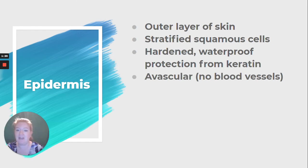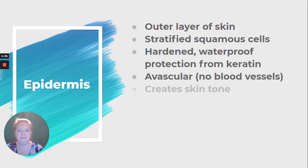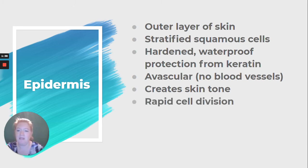It is avascular, meaning no blood vessels. That prefix 'a' means without, and vascular has to do with blood vessels — so avascular means without blood vessels. The epidermis creates our skin tone through a pigment called melanin. In the epidermis, there's relatively rapid cell division, especially at the basal or bottom layer.